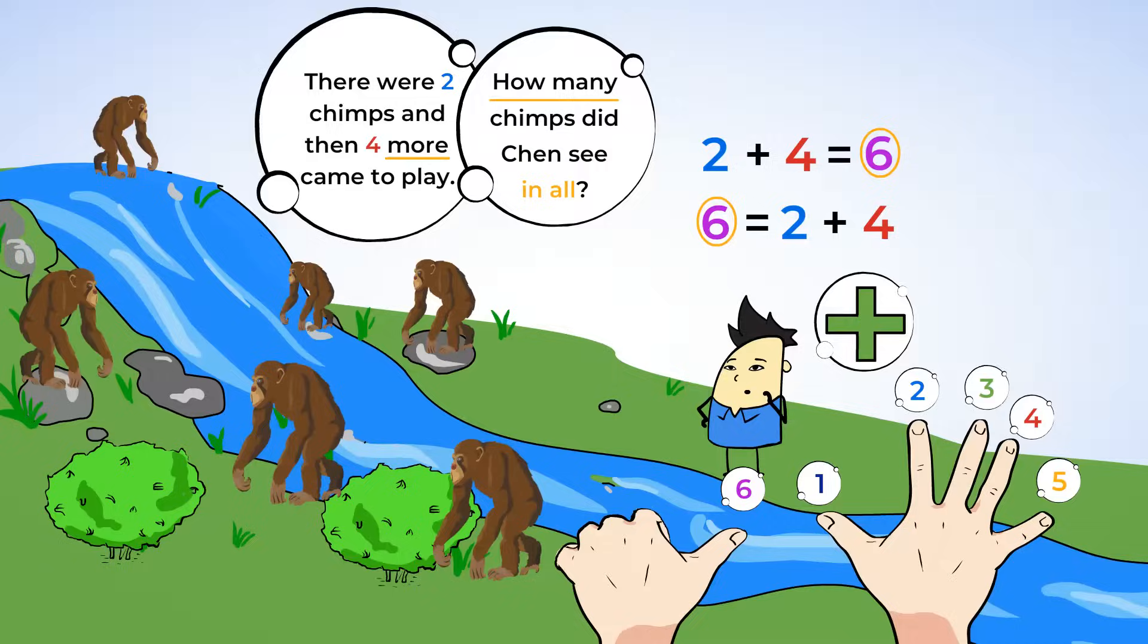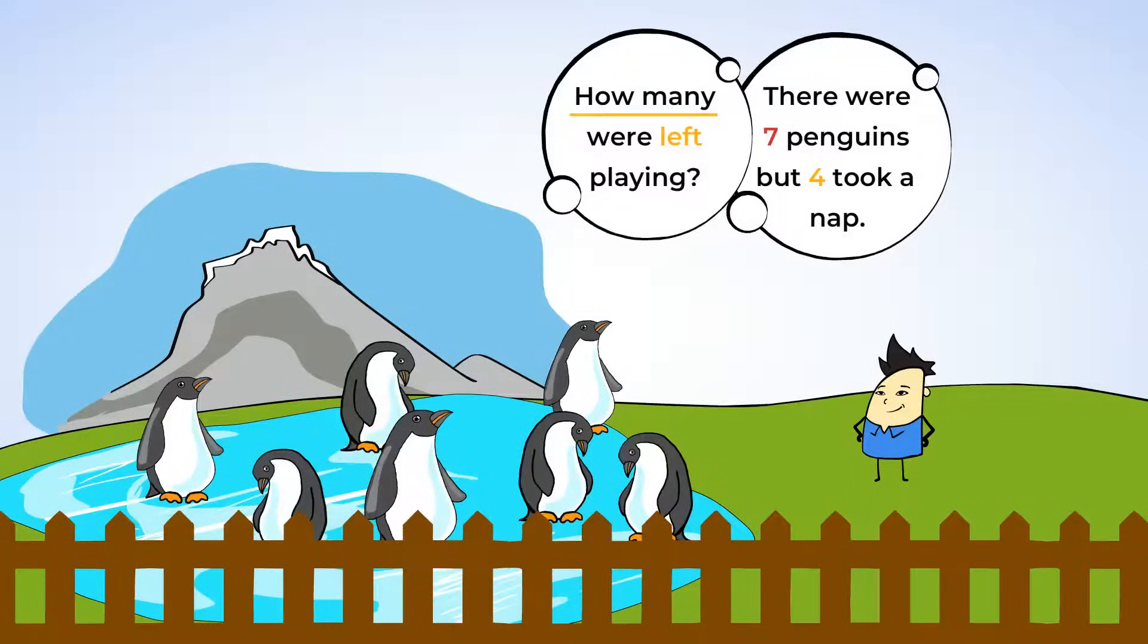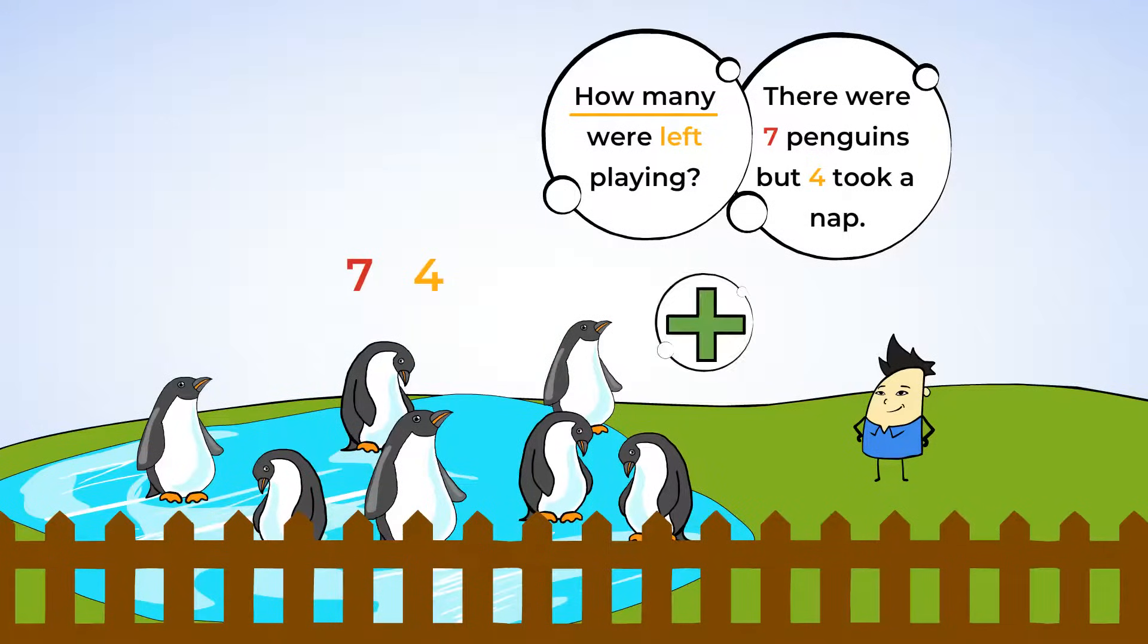Chen also said he went by the penguin exhibit. He said there were seven penguins playing in the water. But then four got tired and took a nap. How many penguins were left playing in the water? Okay. Let's figure this out. There were seven penguins and four got tired. So, our numbers are seven and four. Let's write those. Are we adding or subtracting?